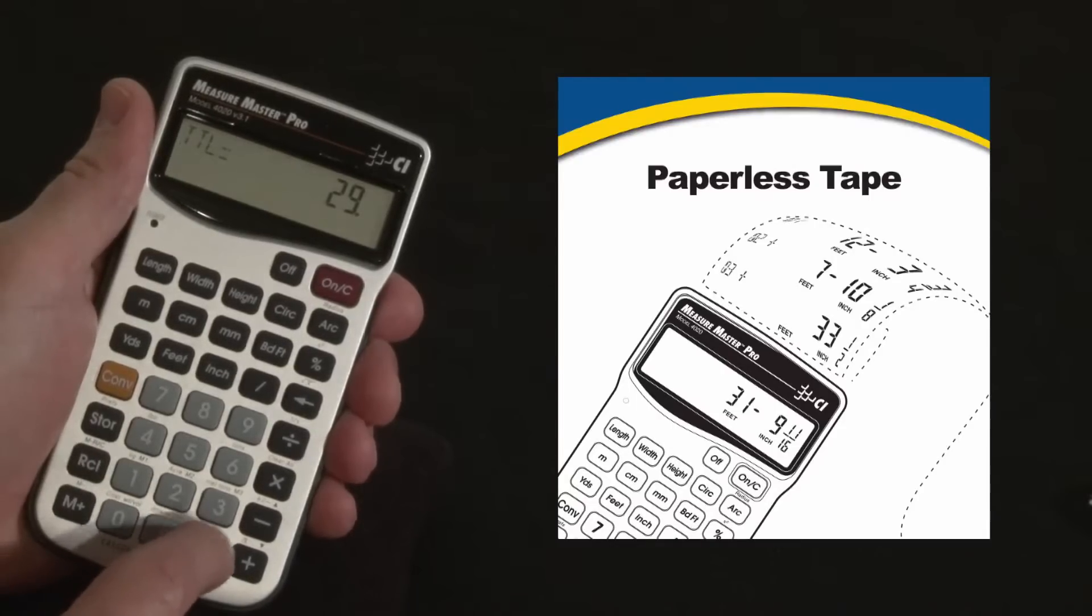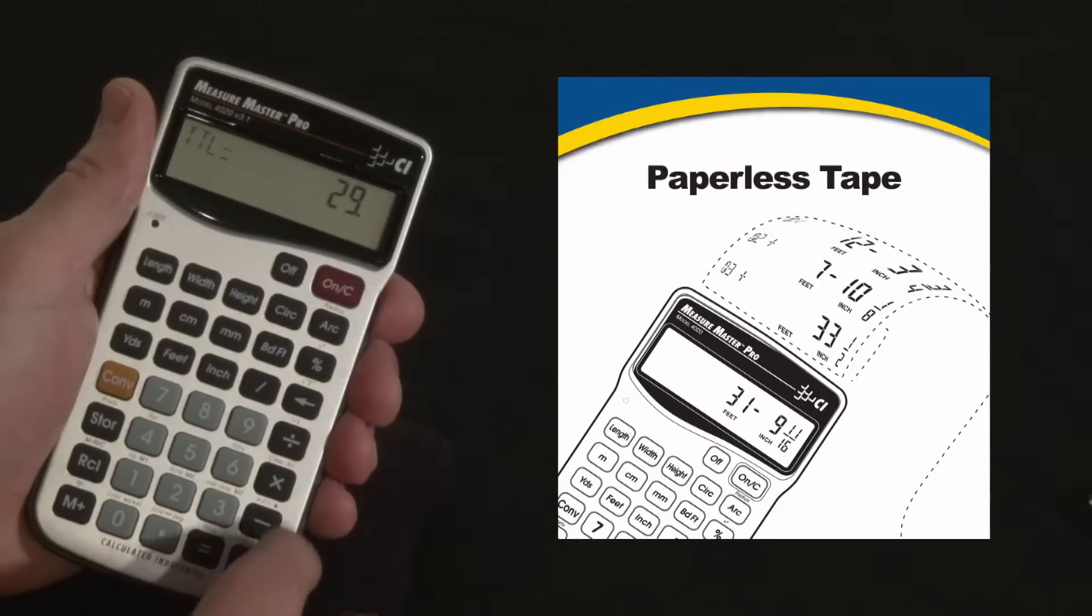So recall tape, it says 29 is the total. Great. Now using the plus and minus key you can go up and down that list of values.